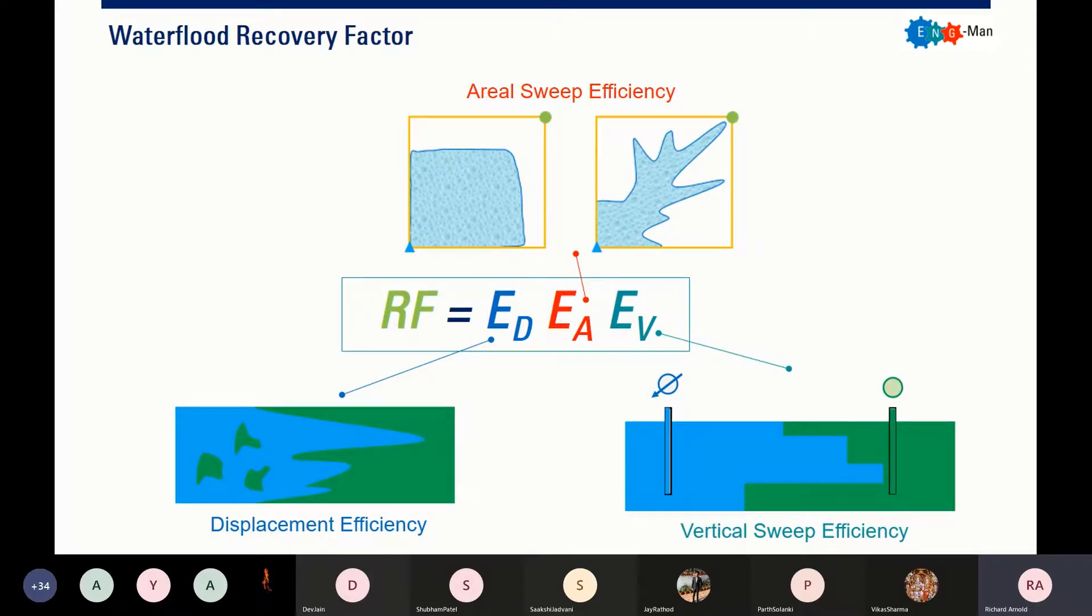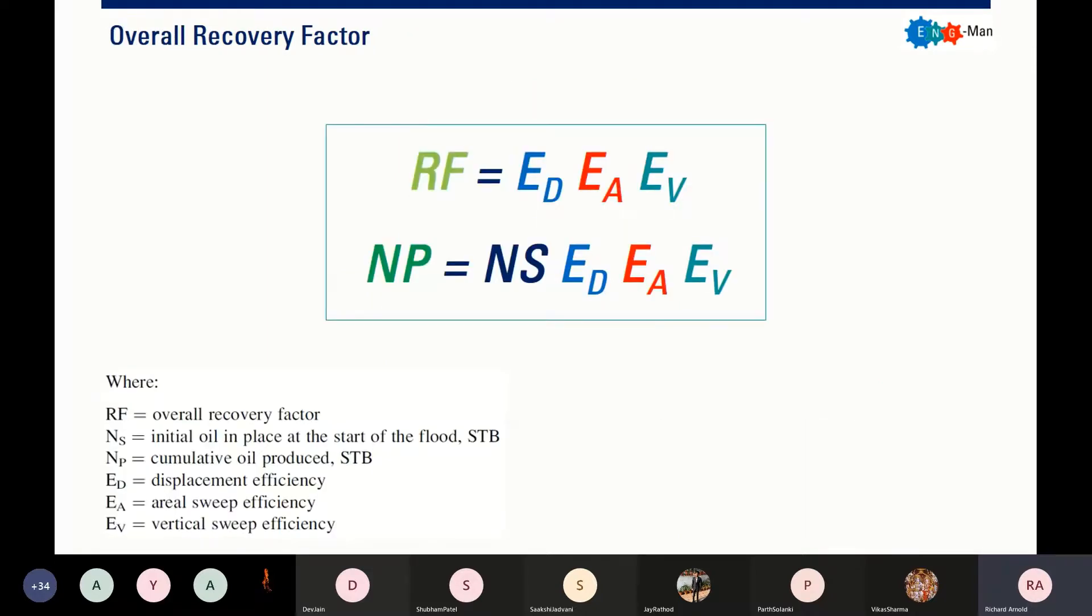To calculate the cumulative production that we can recover from water flood, this is the simple formula. NP is cumulative oil produced after the water flood and NS is the initial oil in place at the start of the water flood. And of course displacement efficiency E_D, aerial sweep efficiency E_A, and vertical sweep efficiency E_V. We need to calculate or estimate the displacement efficiency, aerial sweep efficiency, and vertical sweep efficiency. These are the things that we will learn in this presentation.